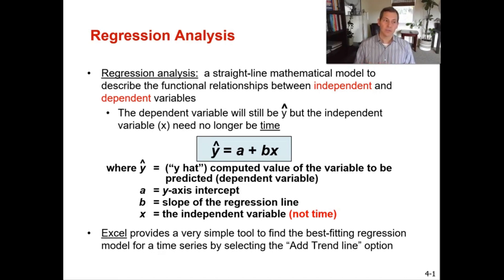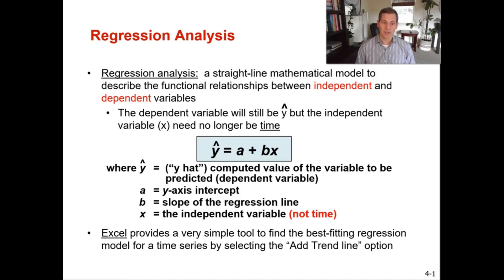Regression analysis is a straight-line mathematical model describing the functional relationship between independent and dependent variables. The formula is still the same: y-hat is the computed value of the predicted dependent variable, a is your y-axis intercept, b is your slope of the regression line, and x is the independent variable — not time.